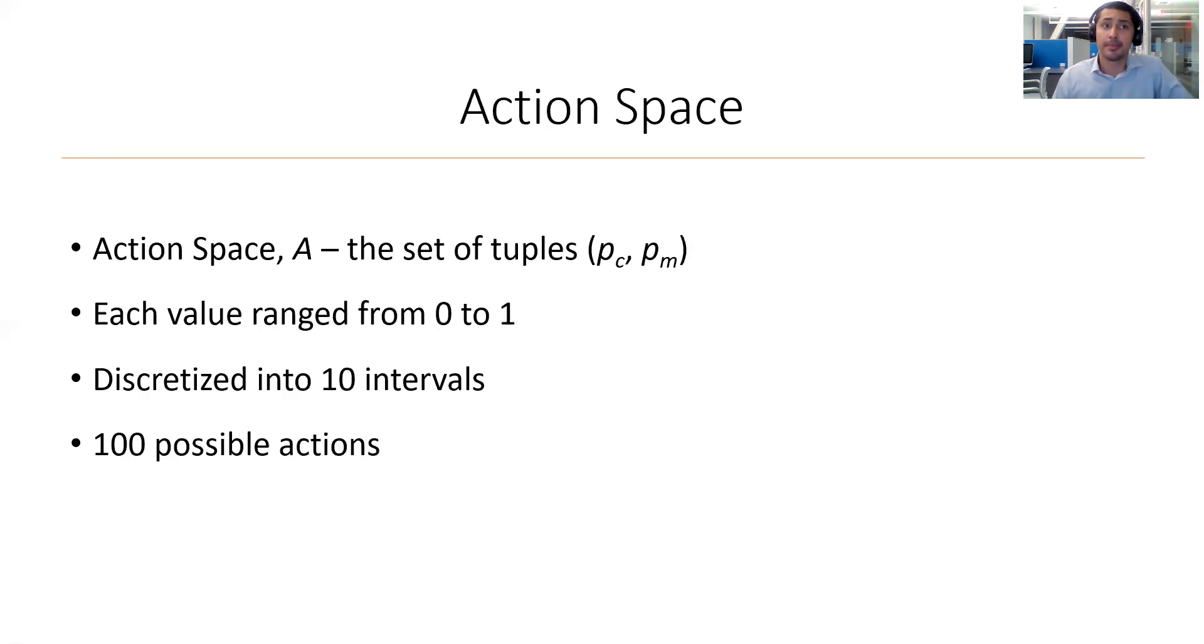Now for the action space within this. The action space consisted of the set of all possible tuples containing values for these rates. The rates range from 0 to 1 and were grouped into 10 intervals, giving us a total of 100 pairs.